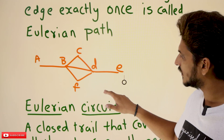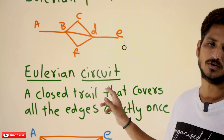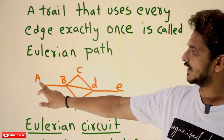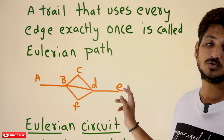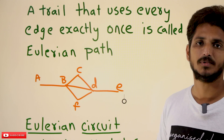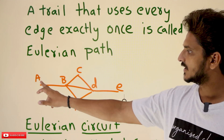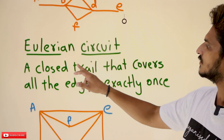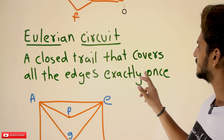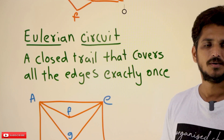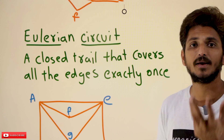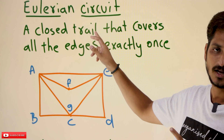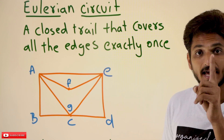Similarly, now we need to understand what is meant by Eulerian circuit. Circuit means closed; path means open. The starting vertex and ending vertex should be different — that is what path means. Here the starting is A and ending is E. A circuit means a closed trail that covers all the edges exactly once, meaning the starting vertex and the ending vertex should be the same. That is what we call a circuit. Eulerian circuit means a closed trail that covers all the edges exactly once.